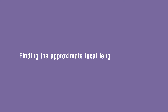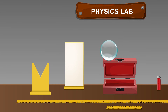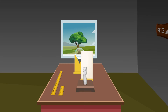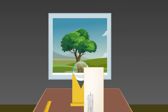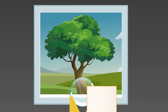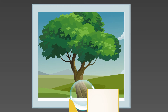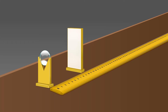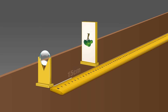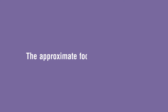As a first step, let us find the approximate focal length of the given lens. Take a thin convex lens and place it vertically on a lens holder kept on a table. Focus rays from a distant object, for example a tree, using the convex lens and obtain an image on a screen placed on the other side. Move the screen back and forth to obtain a sharp and clear image. Measure this distance between the screen and the lens as the approximate focal length f — let it be 15 centimeters.